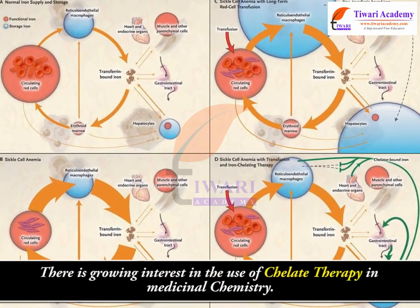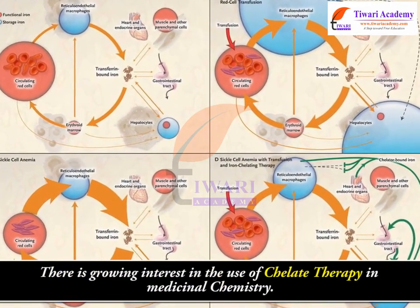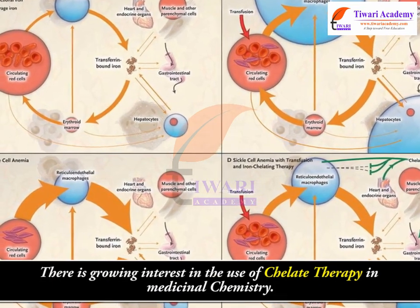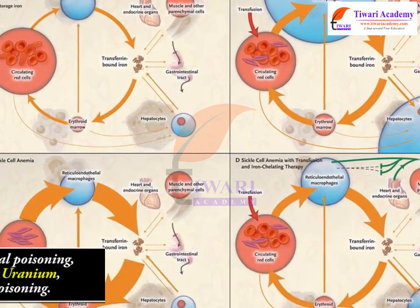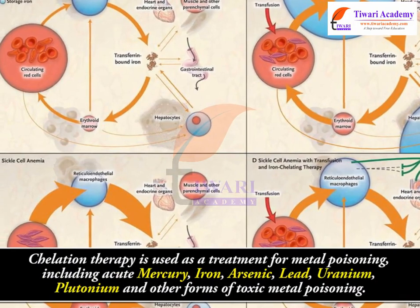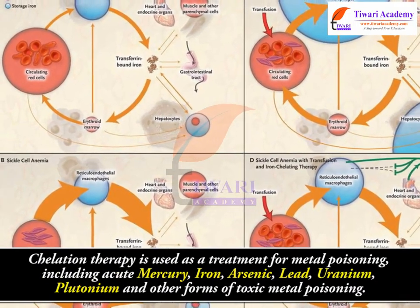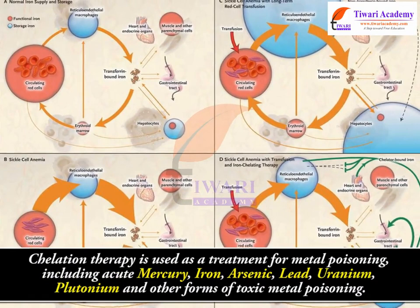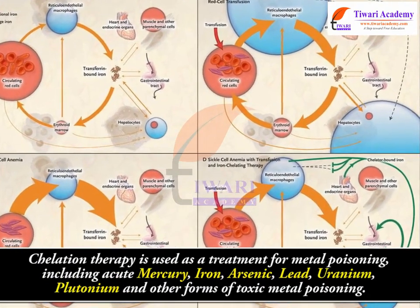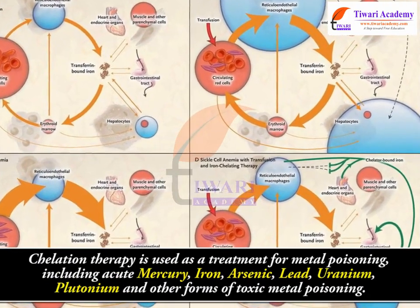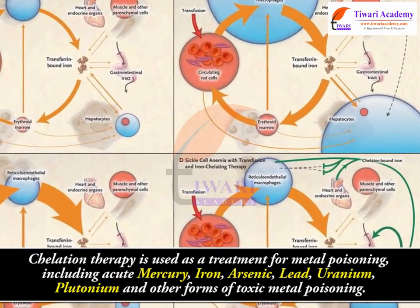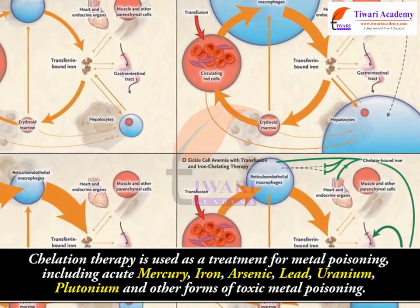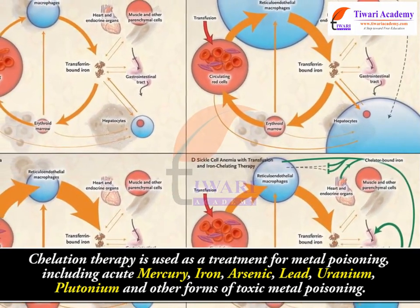There is growing interest in the use of chelate therapy in medicinal chemistry. Chelation therapy is used as a treatment for metal poisoning, including acute mercury, iron, arsenic, lead, uranium, plutonium, and other forms of toxic metal poisoning.